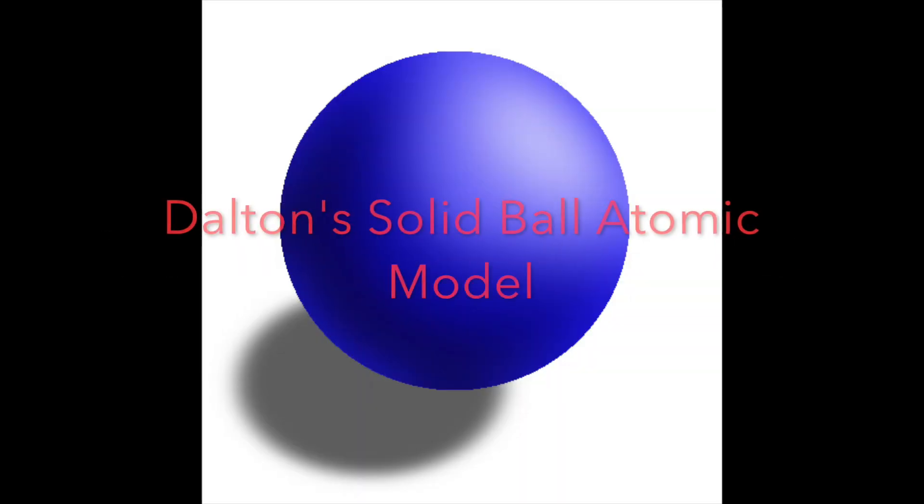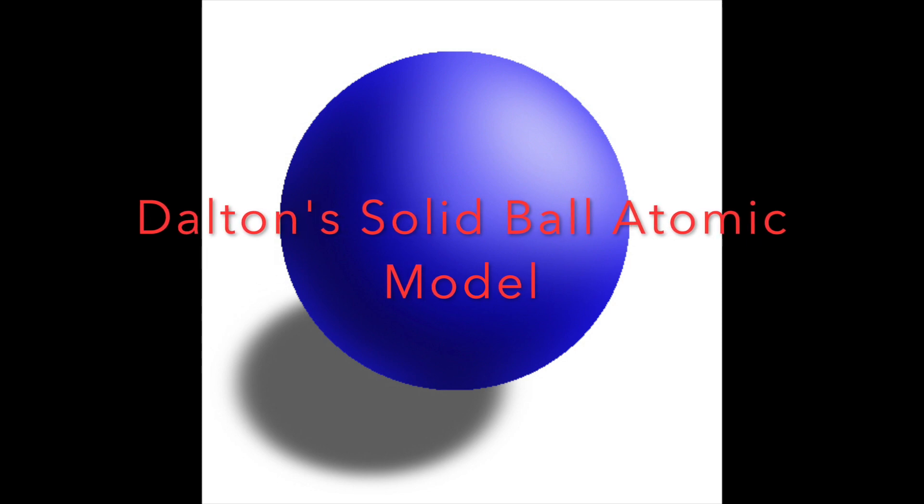This is a quick history of the different atomic models that have been proposed to explain what an atom is. The first was in 1807 by John Dalton, and he thought atoms were solid balls of matter, that if you broke down a sample smaller and smaller,